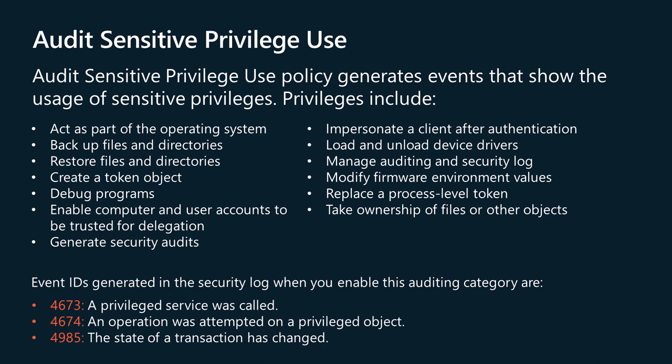The following events will be enabled if you configure auditing through this policy: 4673, a Privileged Service was called; 4674, an Operation was attempted on a Privileged Object; 4985, the State of a Transaction has changed.